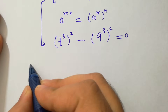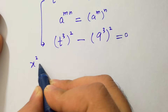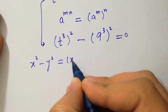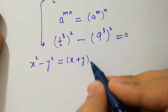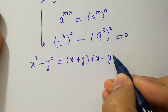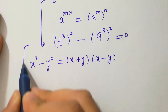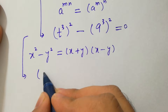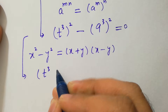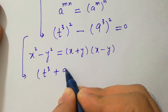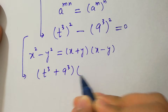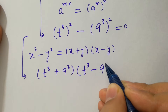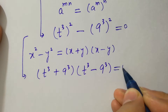Applying the difference of squares formula x² minus y² equals (x + y)(x − y), we get (t³ + 9³)(t³ − 9³) equals 0.